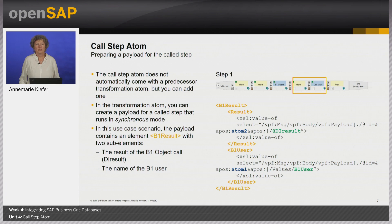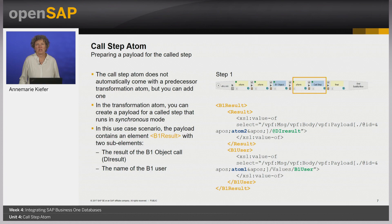The call step atom does not come with the predecessor transformation atom, but we have added one — that is atom 5. This allows you to create a payload for a call step that runs in synchronous mode. Instead of the full XML message, the call step will retrieve this payload from the body section of the message. In this use case scenario, we will use a transformation atom to create a payload. The payload will contain the root tag element B1 result with two sub-elements: the result of the B1 object call extracted from the B1 object atom, and the name of the B1 user extracted from the initial transformation atom.